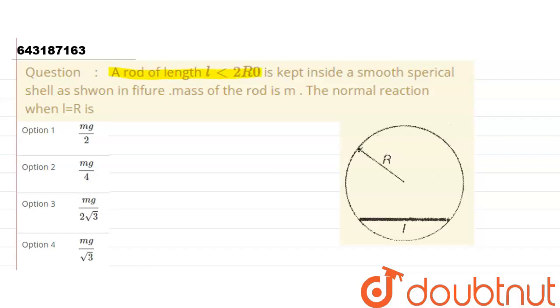A rod of length l less than 2R₀ is kept inside a smooth spherical shell as shown in the figure. Mass of the rod is m. The normal reaction when l equals R is what we have to calculate.